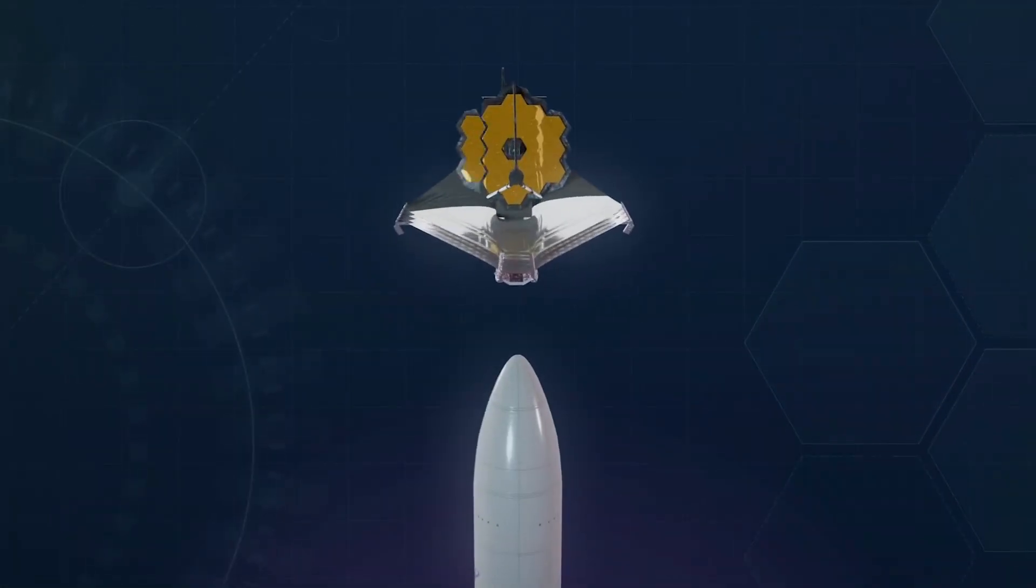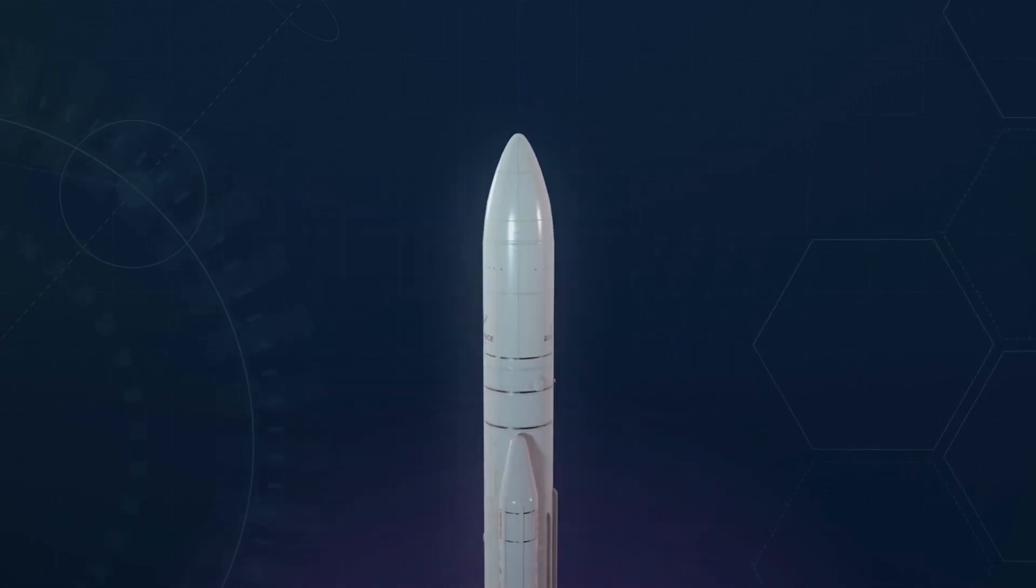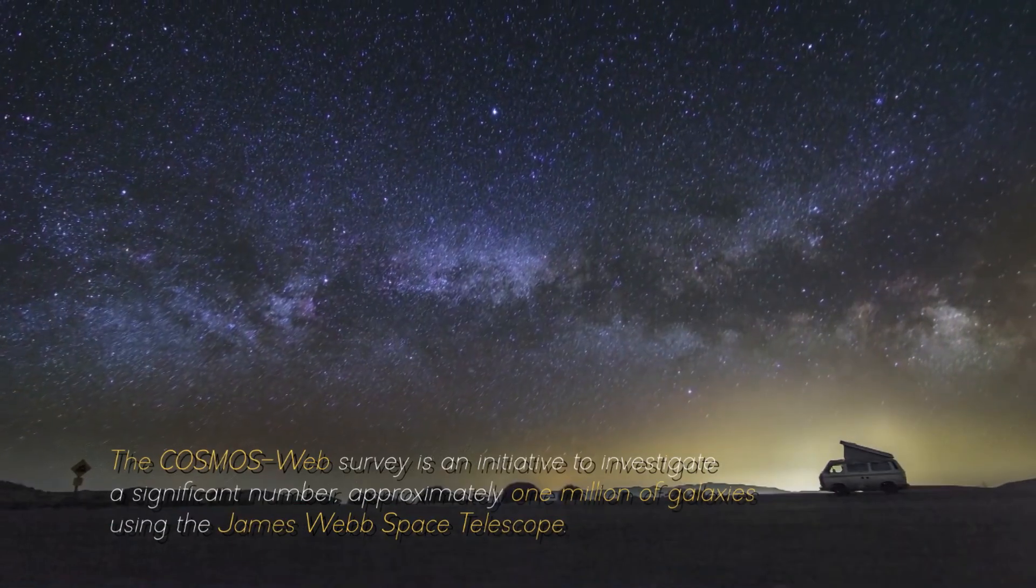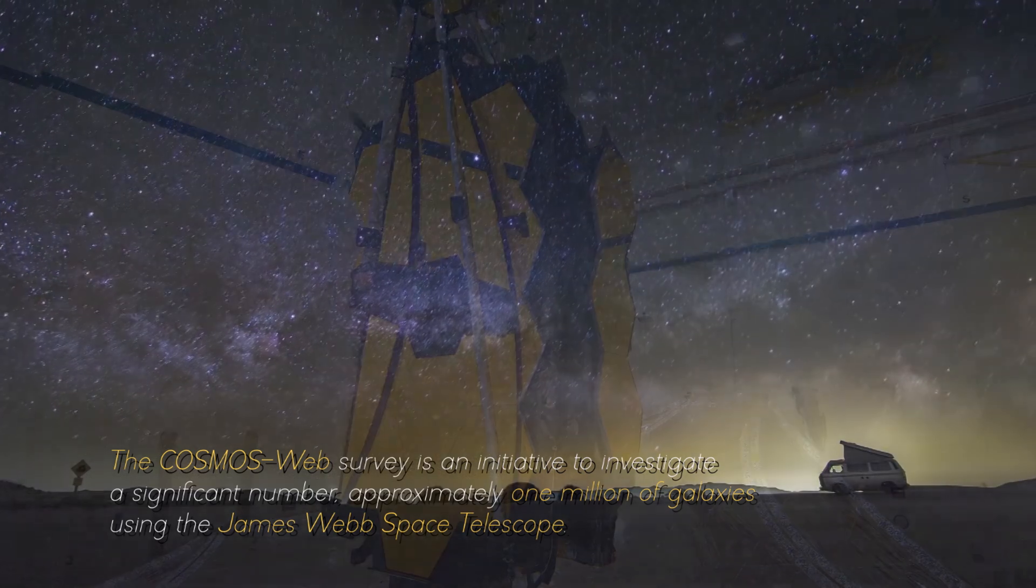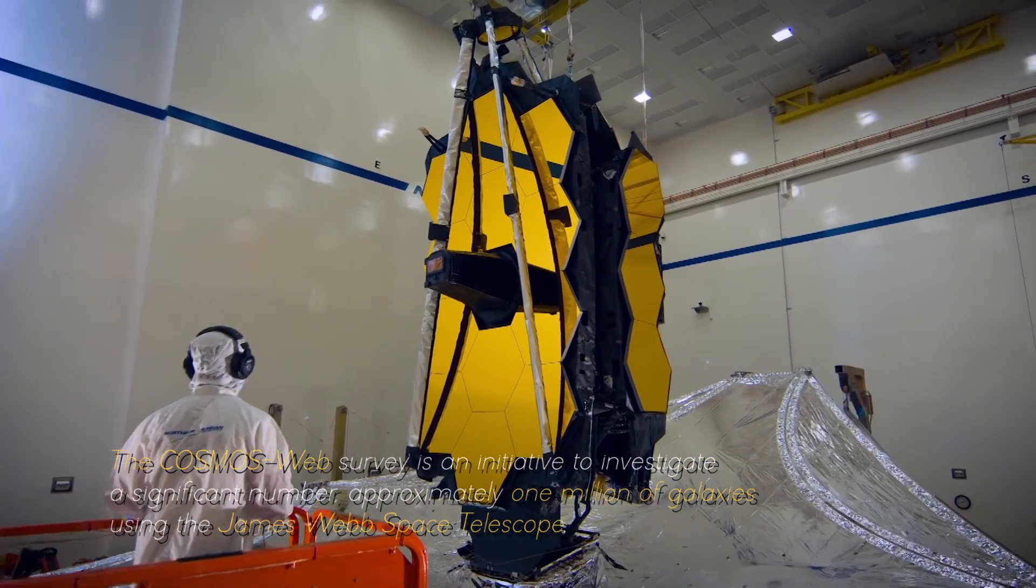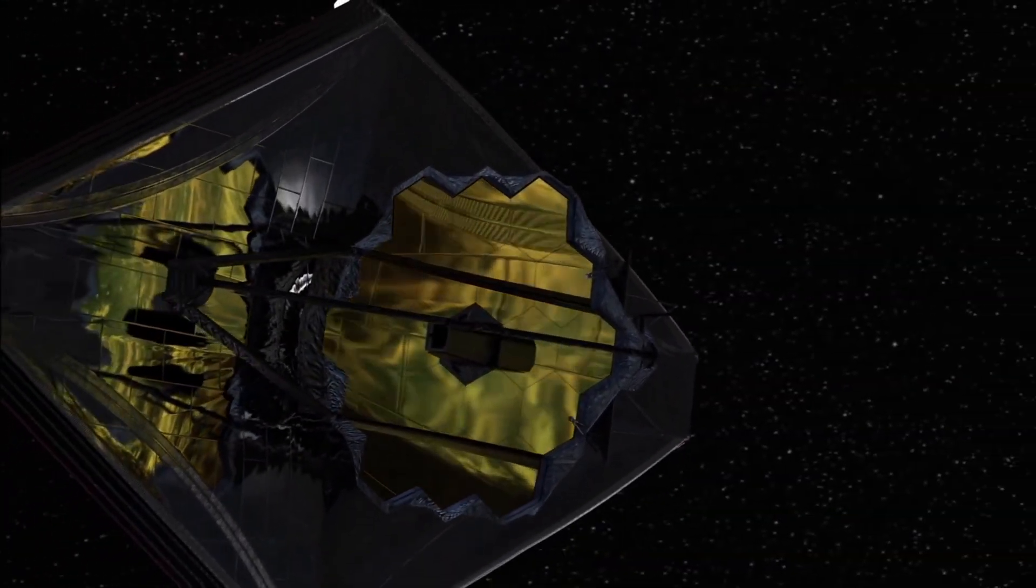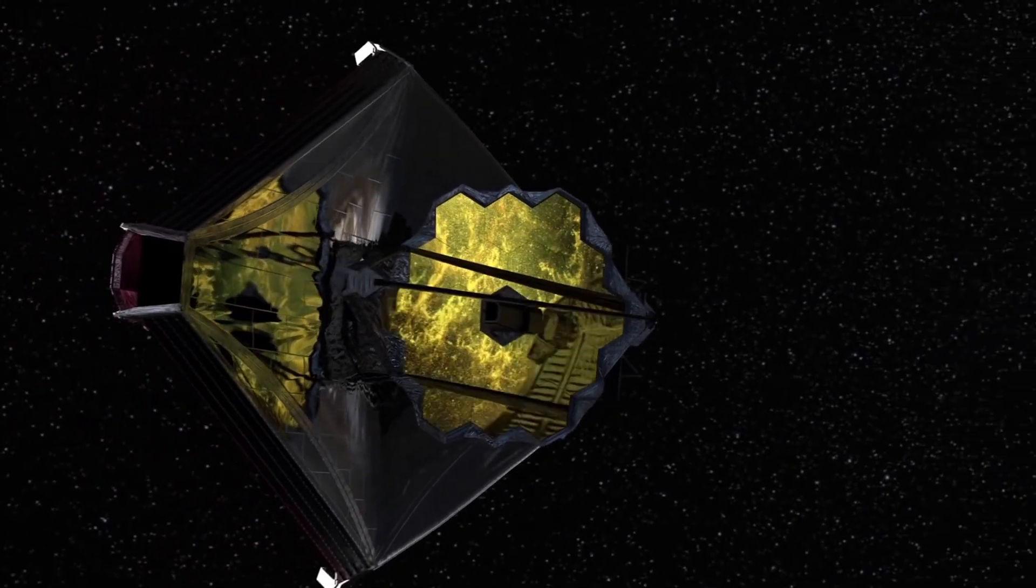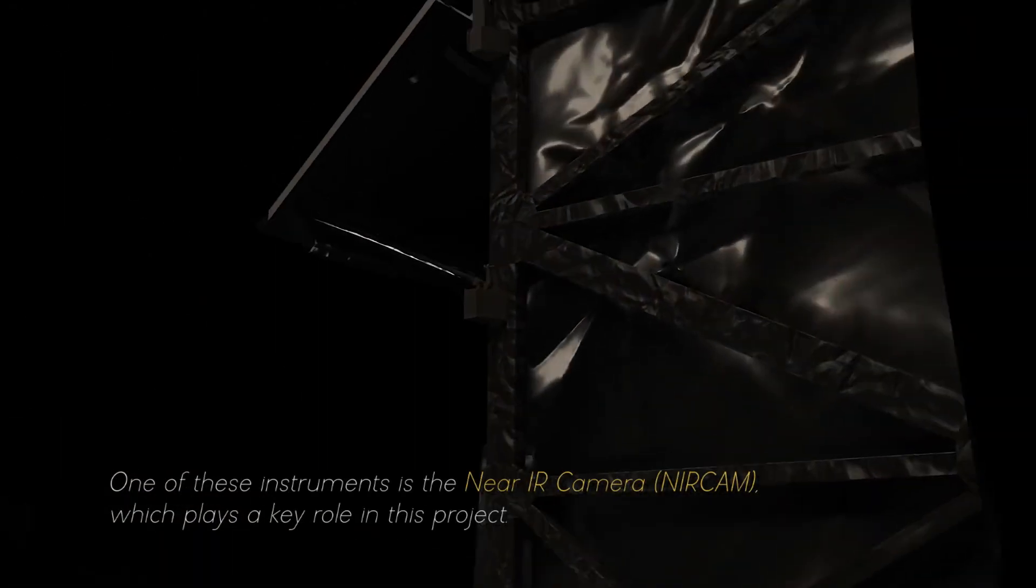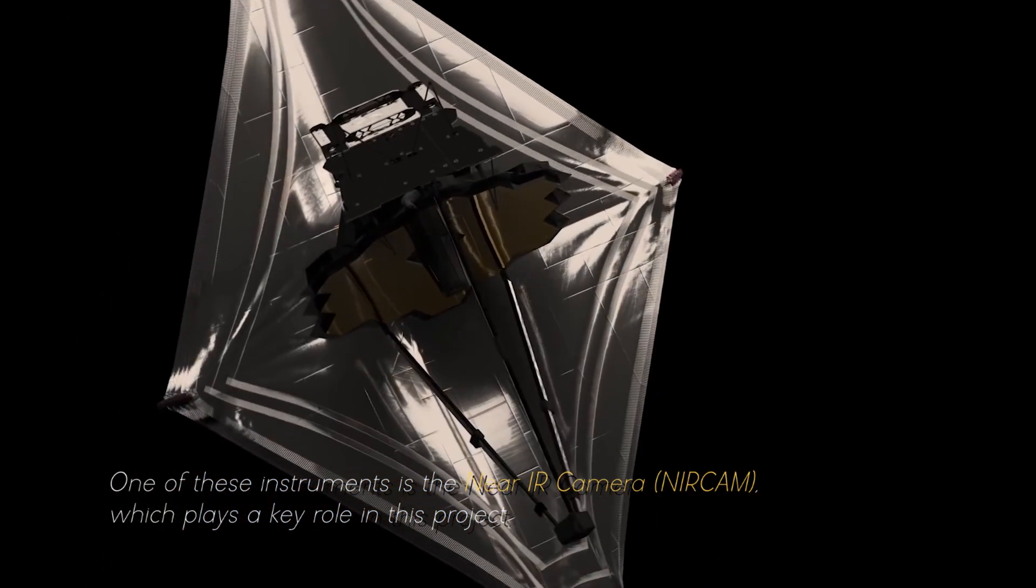What is the Cosmos Web Survey project and how is the James Webb Space Telescope involved in this project? The Cosmos Web Survey is an initiative to investigate a significant number, approximately one million galaxies, using the James Webb Space Telescope. This telescope has four scientific instruments that make it possible to observe the infrared light of the universe with unprecedented resolution and sensitivity. One of these instruments is the NIR camera, NIRCam, which plays a key role in this project.